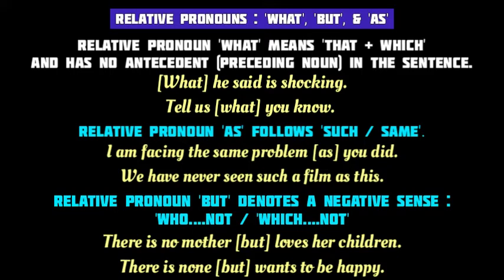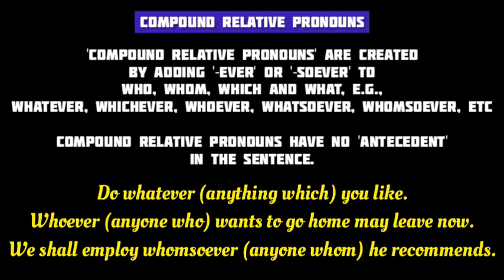The relative pronoun 'but' is used in a negative sense, meaning 'who not' or 'which not.' For example, 'There is no mother but loves her children' — here 'but' means 'who does not,' so the sentence means 'There is no mother who does not love her children.' In the next sentence, 'but' similarly means 'there is none who does not want to be happy.' The relative pronoun 'but' always denotes a negative sense.